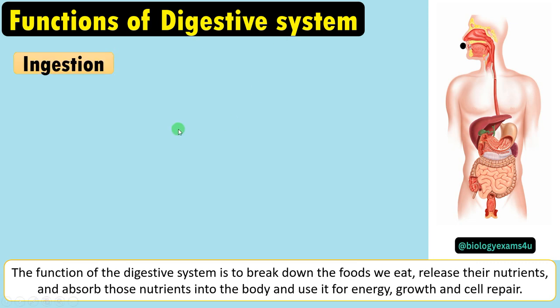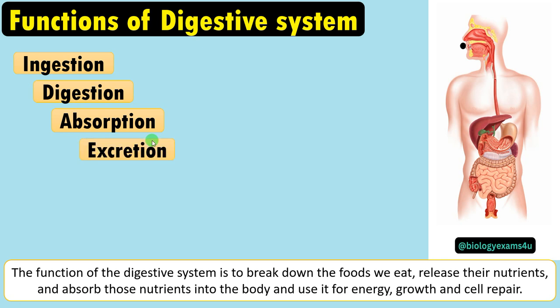The four major functions of digestion are: ingestion of food, then digestion of food by means of mechanical digestion and chemical digestion, followed by absorption of food which primarily takes place through the small intestine, and finally the undigested matter is removed by defecation or excretion.